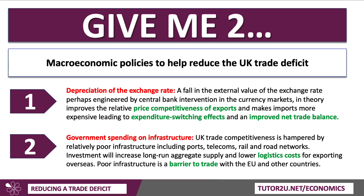On the fiscal side, the government might ramp up spending on infrastructure. The UK's trade competitiveness is widely regarded as lagging behind in terms of infrastructure — ports, telecoms, gaps and problems with rail and road networks — all of these things drive costs up. If you can increase and improve your infrastructure, it increases long-run aggregate supply and lowers logistics costs of getting goods to market. Poor infrastructure acts effectively like a tax on exporting; it is a barrier to trade both with the European Union, our closest trading neighbours, and also other countries. So exchange rates and fiscal policy are two macro policies that might be employed.